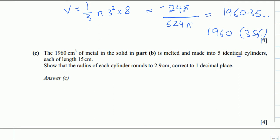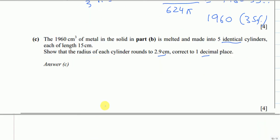Identical is important here. Each cylinder has length 15 cm. Show that the radius of each cylinder rounds to 2.9 cm correct to one decimal place. So we have 1960 cm³ divided equally into five cylinders.